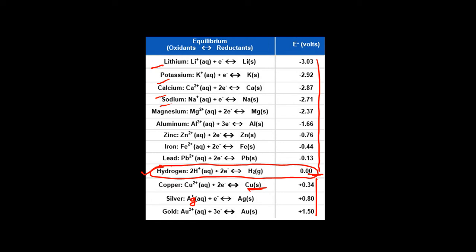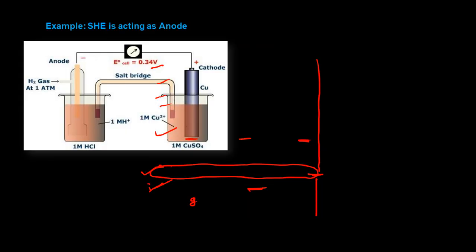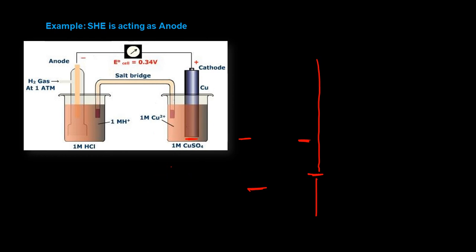When copper is the other electrode, copper will accept electrons from the hydrogen system — from SHE. With zinc, the opposite occurs: zinc gives electrons, is converted to Zn²⁺, and H⁺ accepts the electrons from zinc. In the example where SHE acts as anode, following the general convention, anode is on the left-hand side. SHE gives electrons that move towards the copper system, where Cu²⁺ accepts electrons and is reduced to copper.